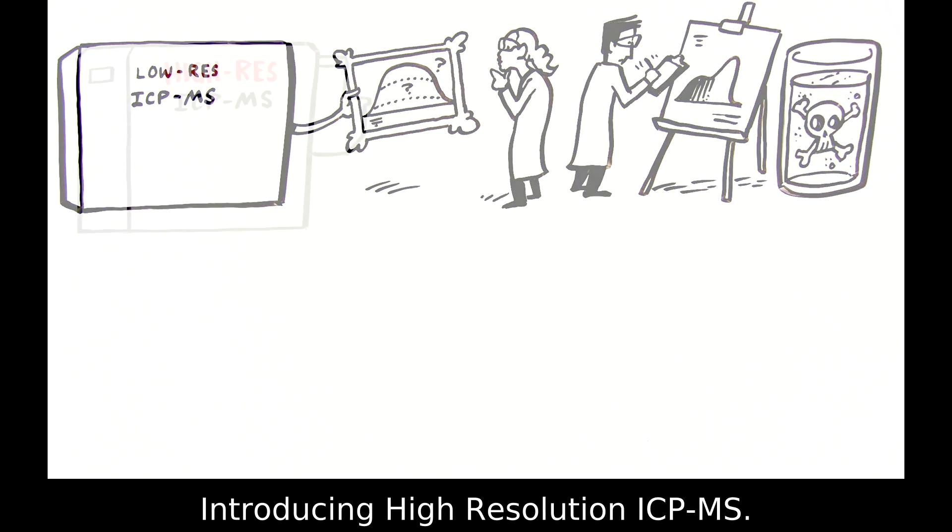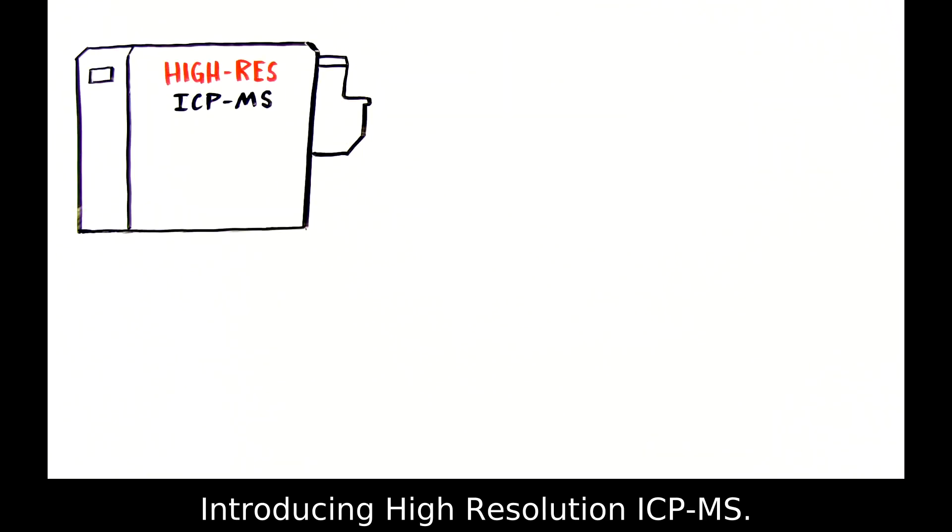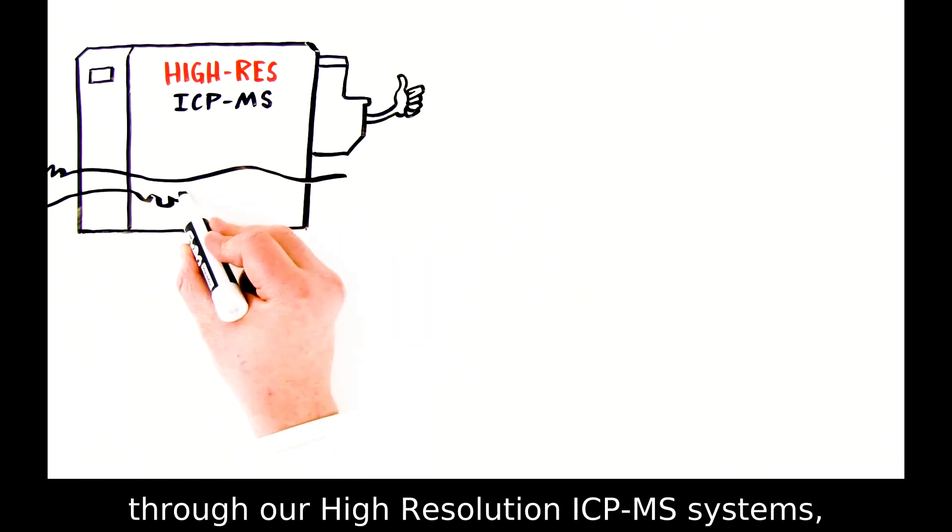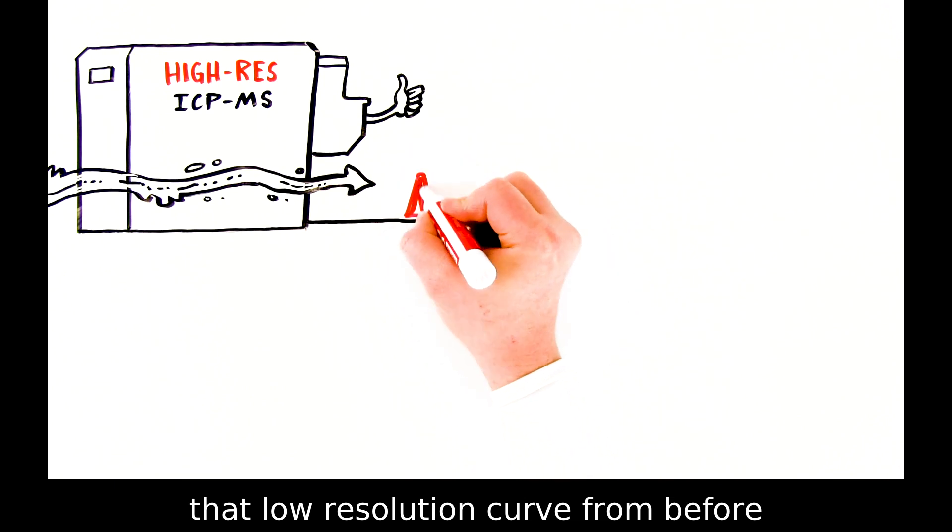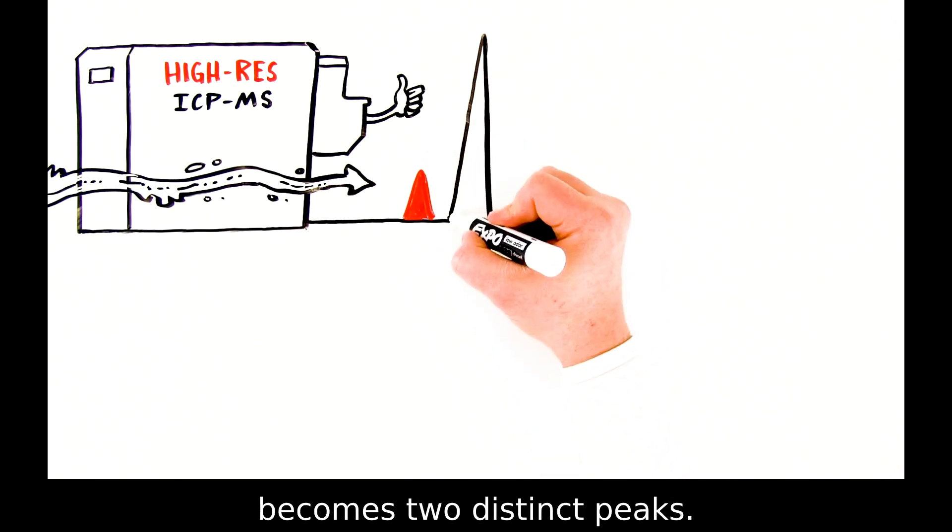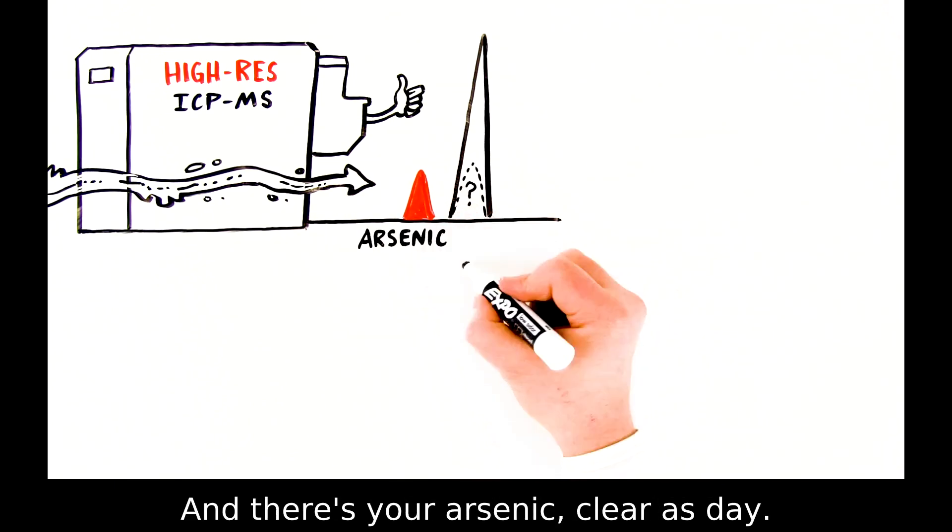Introducing high-resolution ICP-MS. When you run your sample of drinking water through our high-resolution ICP-MS systems, that low-resolution curve from before becomes two distinct peaks. And there's your arsenic, clear as day.